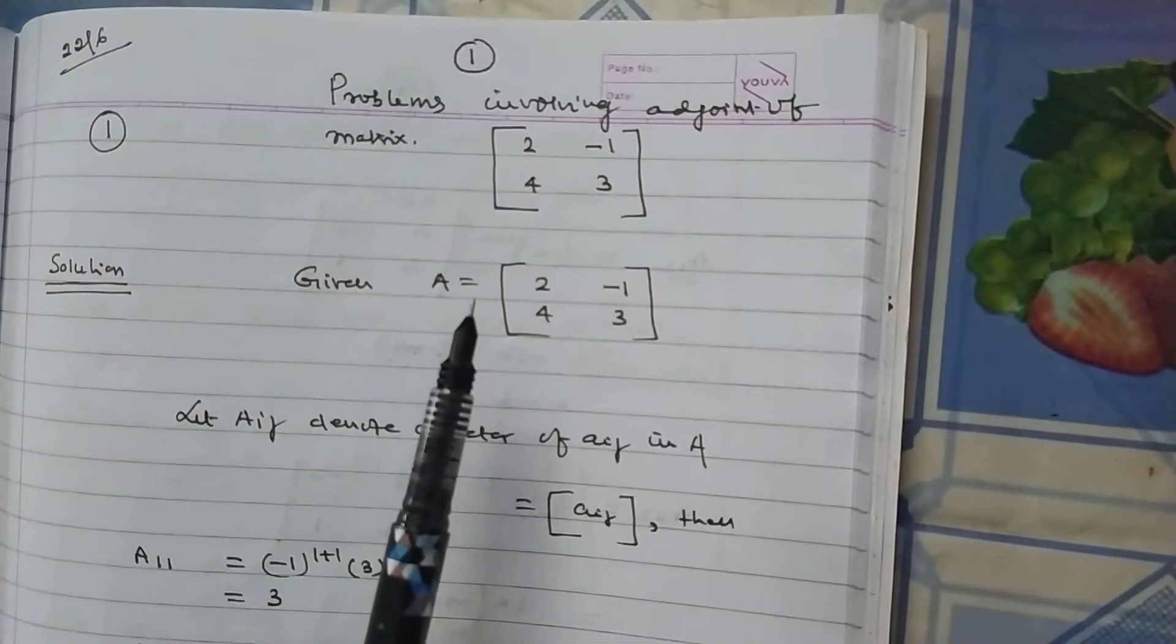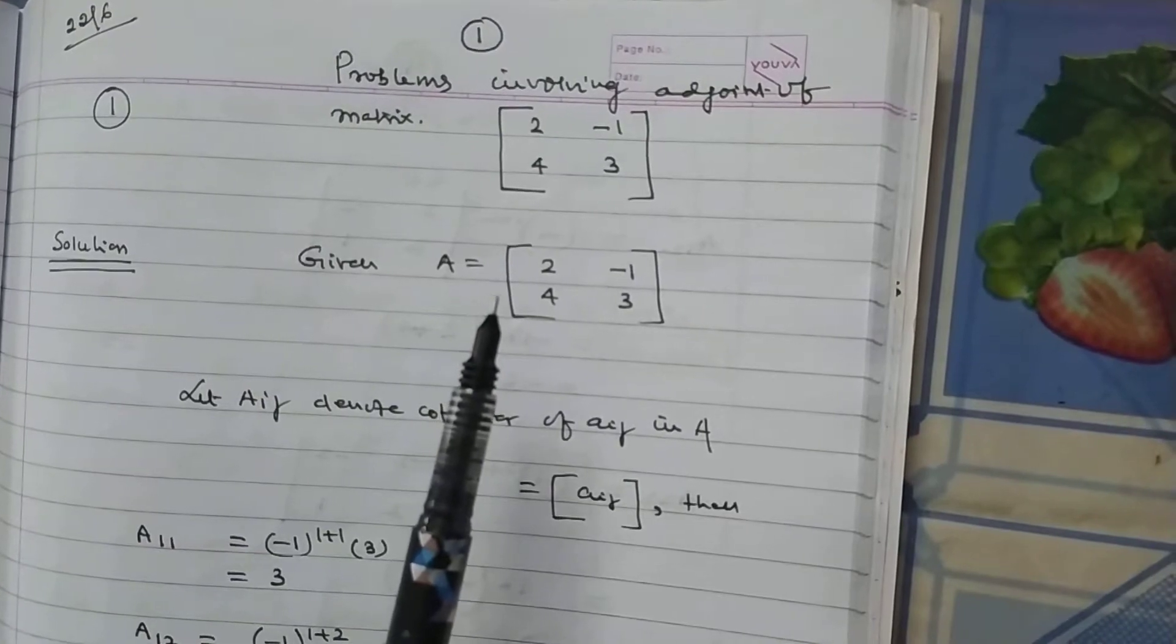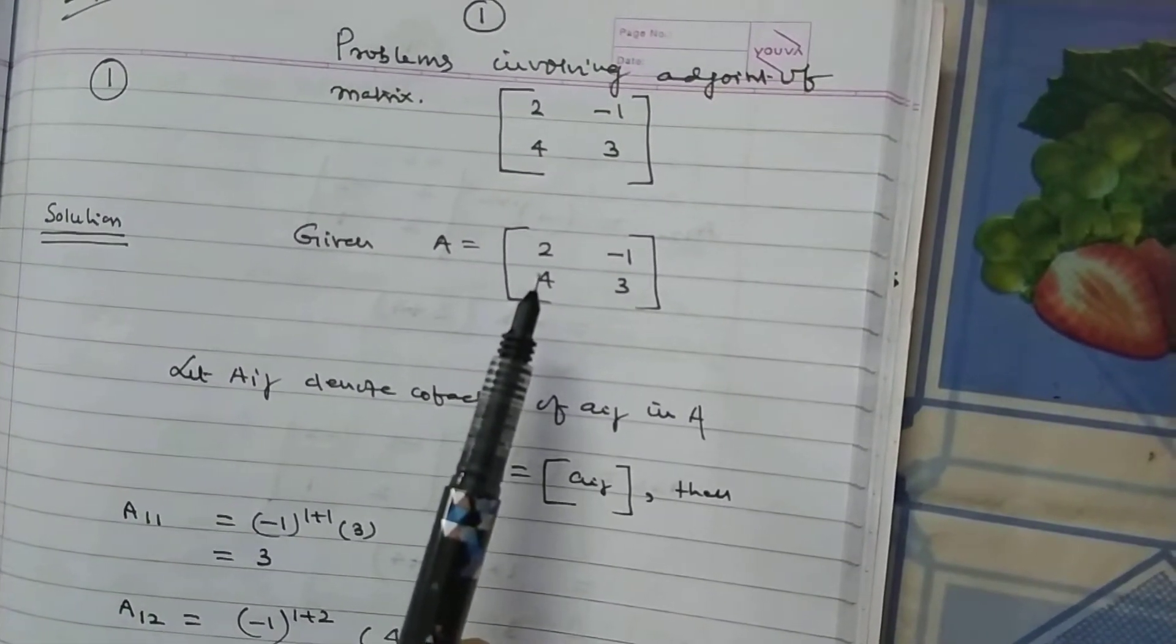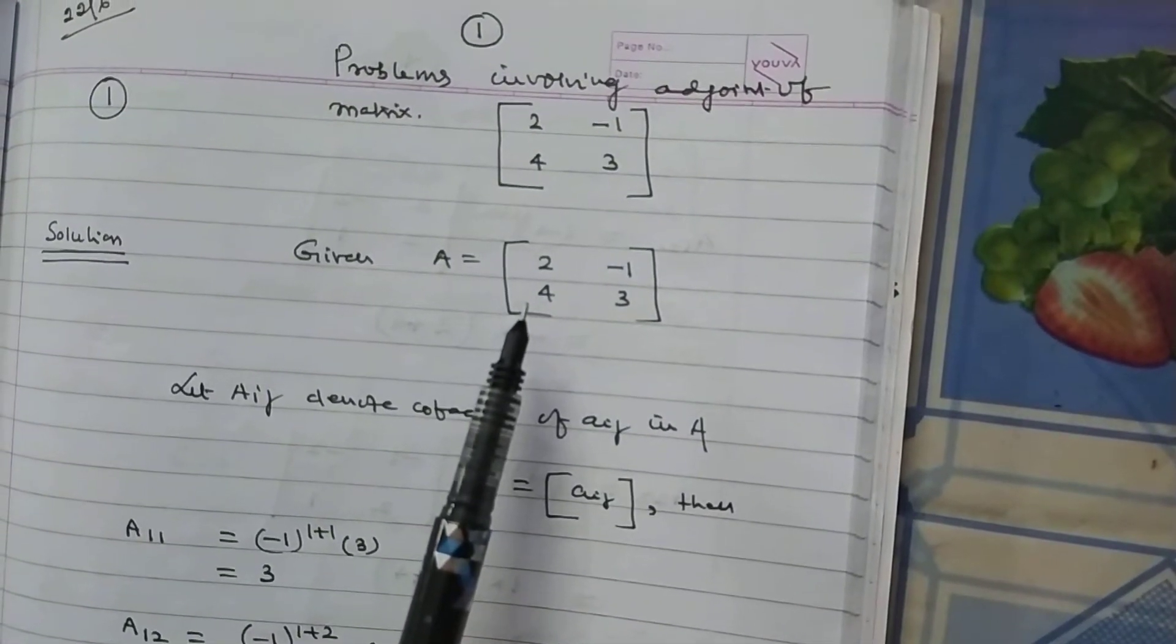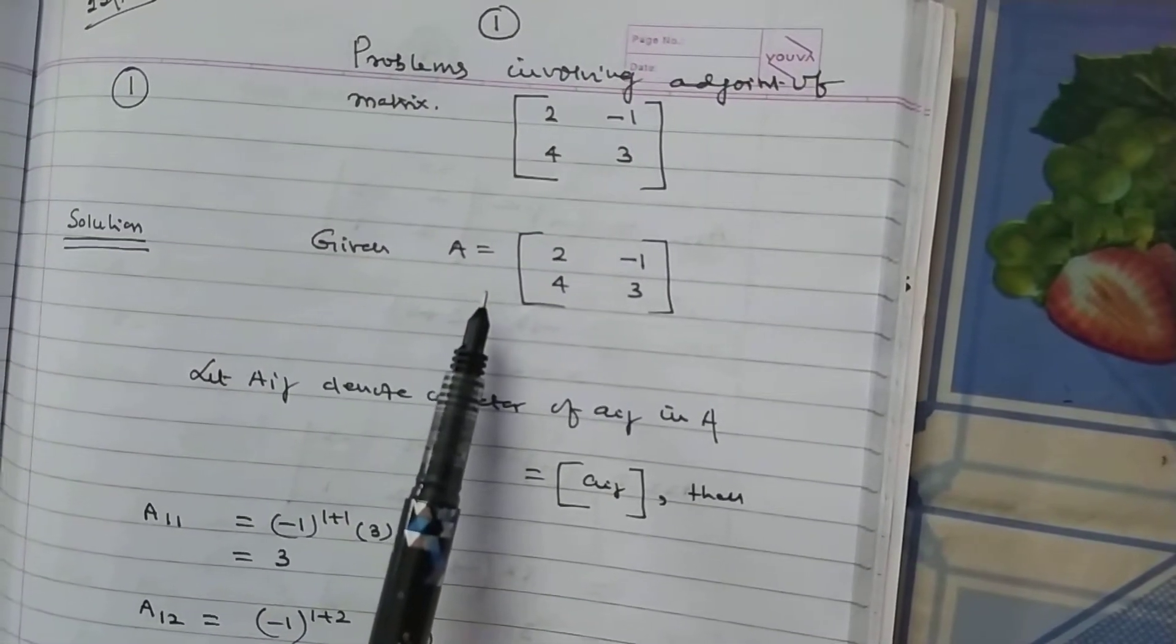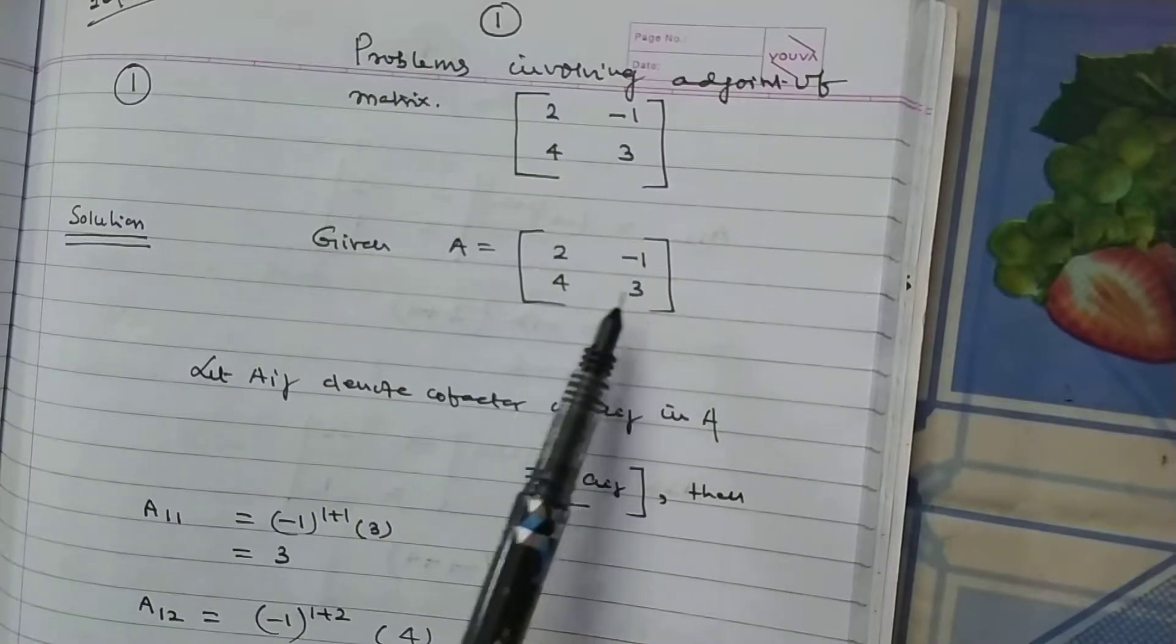Yes, let us start. Today, I want to discuss how you find adjoint of a matrix. My dear loving students, here there is a matrix A having elements 2, minus 1, 4, 3.